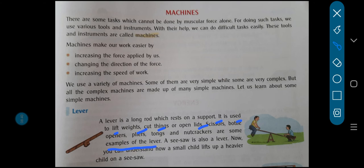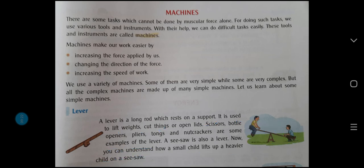A seesaw is also a lever. You might have played on this in the park. This is an example of a simple machine, a lever. Now you can understand how a small child lifts up a heavier child on a seesaw. See the lever—the seesaw has a support in the middle, one straight rod with a support in the center. With the help of that support, a heavy weight child and a light weight child can balance.